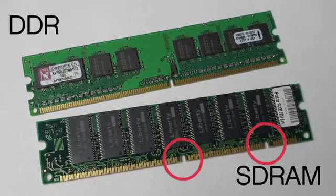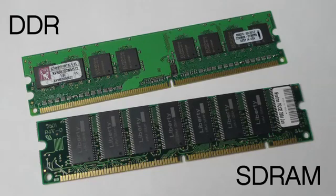Older machines that have SDRAM will have two notches located — one closer to the center and one closer to the far end of the slot. So you want to make sure you're replacing it with the same type: SDRAM for SDRAM, DDR for DDR, DDR2 for DDR2, and DDR3 for DDR3.